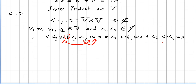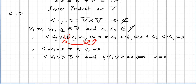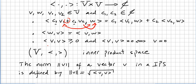One of the properties of the inner product: the second property — the inner product of W and V equals the inner product of V and W conjugate. You can check this, it's easy to check. Third property: the inner product of V and V is always greater than or equal to zero, and the inner product of V and V will be zero if and only if V is zero.